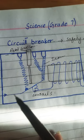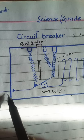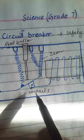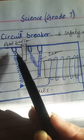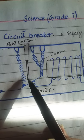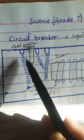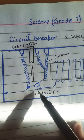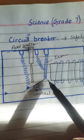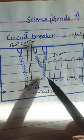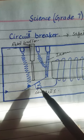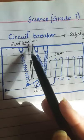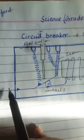Electricity flows through this path and through these contacts. Here is the spring that is trying to pull the contacts apart, and this is the iron bar that doesn't allow the contacts to be pulled apart. This is the reset button and this is the electromagnet.